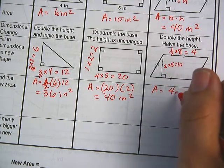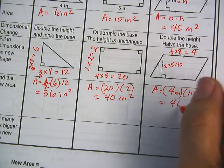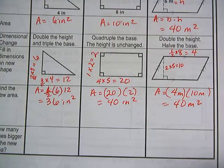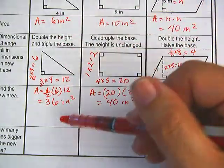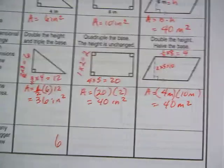Here it's going to be base times height. So the base is 4 meters and the height is 10 meters. And I'm going to get 40 meters squared. How did the areas change? This one, going from 6 to 36, that's 6 times bigger.